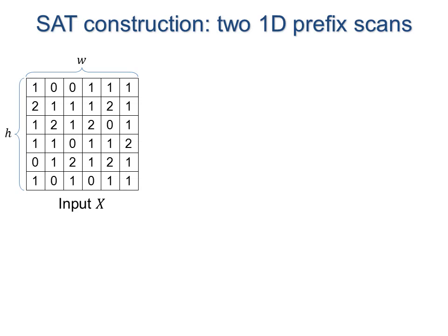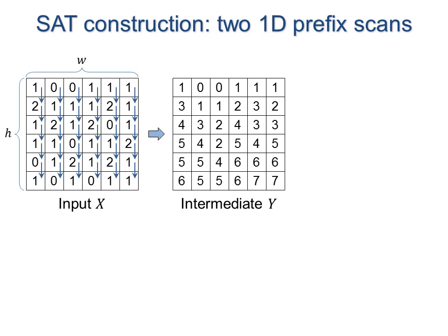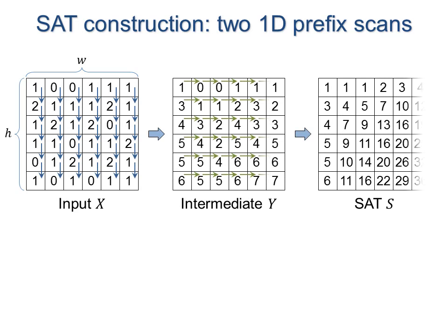For parallelism, the SAT is usually constructed in two passes. First, a prefix scan is computed in the vertical direction, then another prefix scan is computed horizontally. These two successive operations are simple 1D recursive filters.